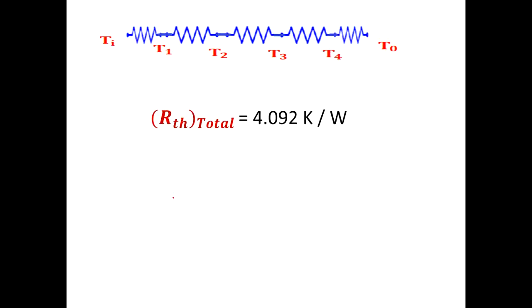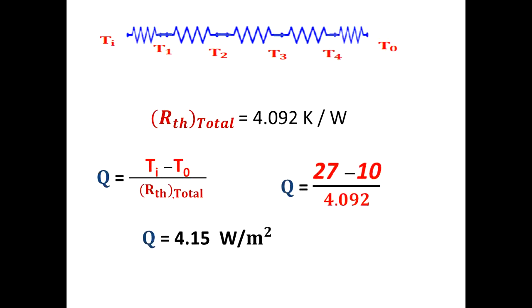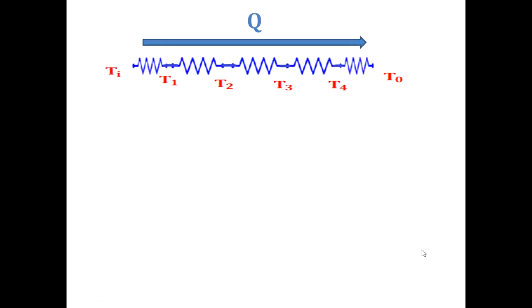Total thermal resistance is given, Q equals T_i minus T_o divided by R_th total. This is the equation I have explained already. The value you will get is 4.15 watt per meter square for one meter square. Then calculate Q for 32 meter square area: 32 into 4.15 equals 132.8 watt.